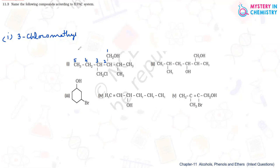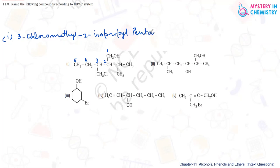3-chloromethyl, then at the second carbon atom, the whole isopropyl group is present, so we write 2-isopropyl. Then the base chain is pentane. The last 'e' is replaced by 'ol' and the position of 'ol' is 1, so we write 1-ol. This is the name of the first compound.